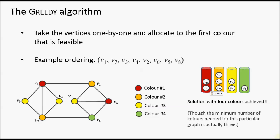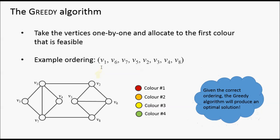This is an approximation algorithm, so it's not guaranteed to produce the optimal solution — and that is the case here. In fact, this graph can be coloured using just three colours. If we consider another permutation of the vertices and follow the greedy algorithm, we get a solution using just three colours. It can be proved that there always exists a permutation of the vertices that will produce an optimal solution via the greedy algorithm. As a consequence, some optimisation methods operate on permutations of the vertices, seeking to find one which minimises the number of colours used.